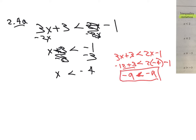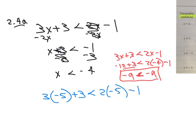No, it is not. But it says x is a number less than negative 4. So if we were to use a number less than negative 4, such as negative 5, and we wrote the same equation using negative 5 — remember negative 5 is smaller than negative 4, it's further away from 0 on the number line — we get negative 15 plus 3 is negative 12, less than negative 10 minus 1 is negative 11.